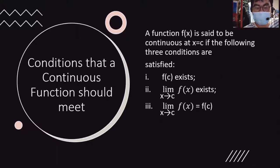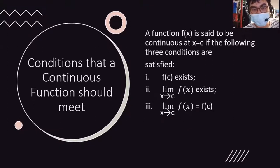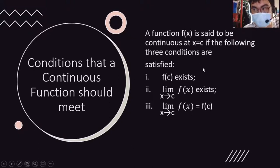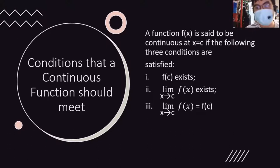When we say continuity, it involves continuous functions. There are conditions that a continuous function must meet. Para maging continuous ang function, these three conditions must be met. A function f(x) is said to be continuous at x = c if the following three conditions are satisfied. First, f(c) exists.